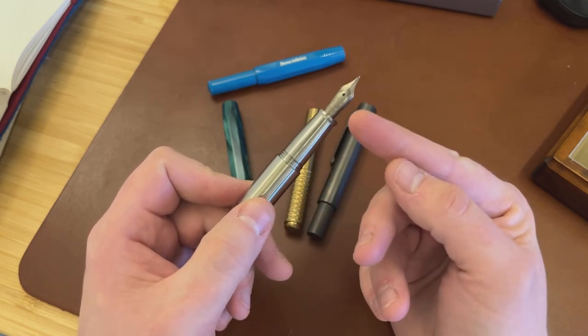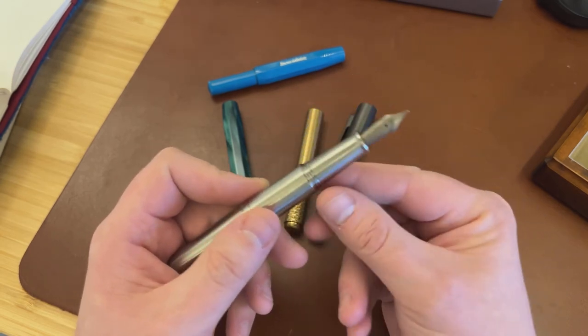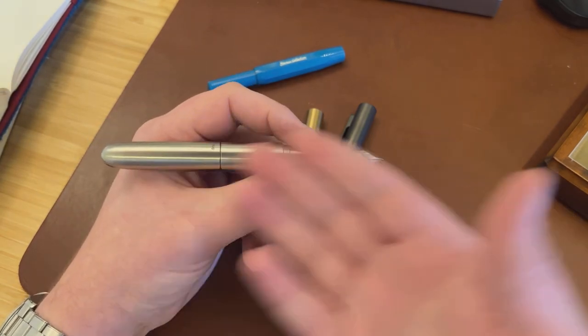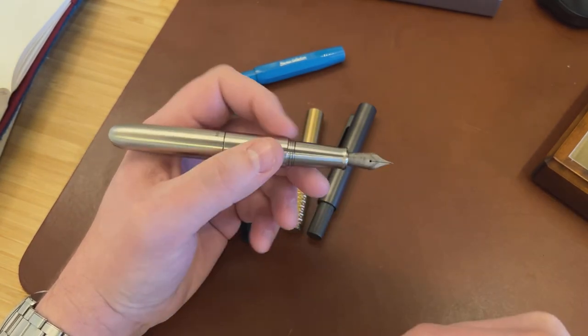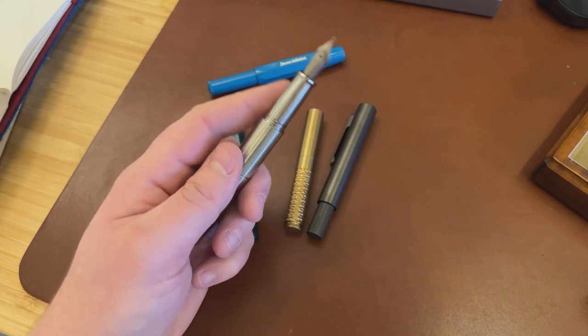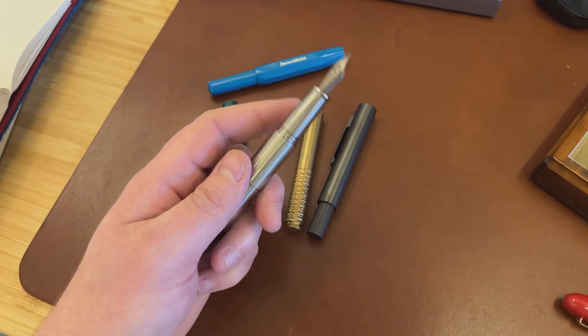it's got a Bock number 6 size nib. This one is titanium. When you have it turned into a pen, into a full-size pen, it really does feel full-size. This section is much bigger and more generous than almost every pen in my collection. And I like big sections.